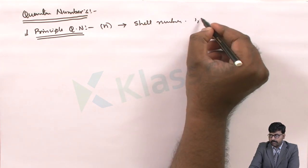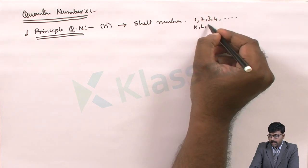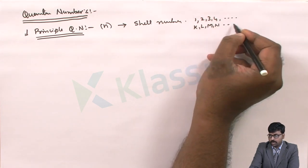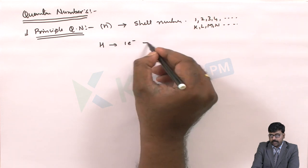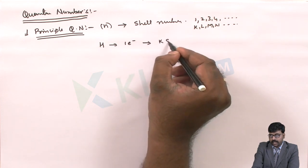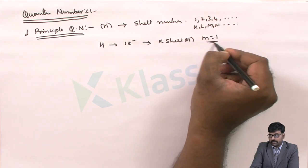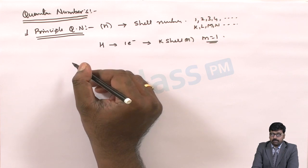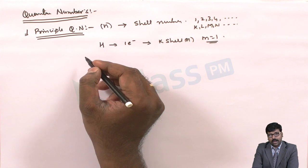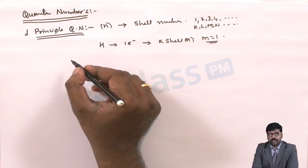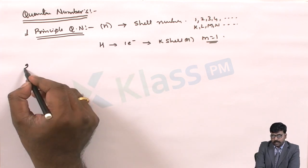The principal quantum number is denoted by n and tells us the shell numbers — starting with 1, 2, 3, 4 and so on, or K, L, M and so on. For example, for the hydrogen atom, the one electron is in the K shell, where n = 1. The principal quantum number gives information on how many shells are in an atom, from which we can calculate how many electrons are in each shell.